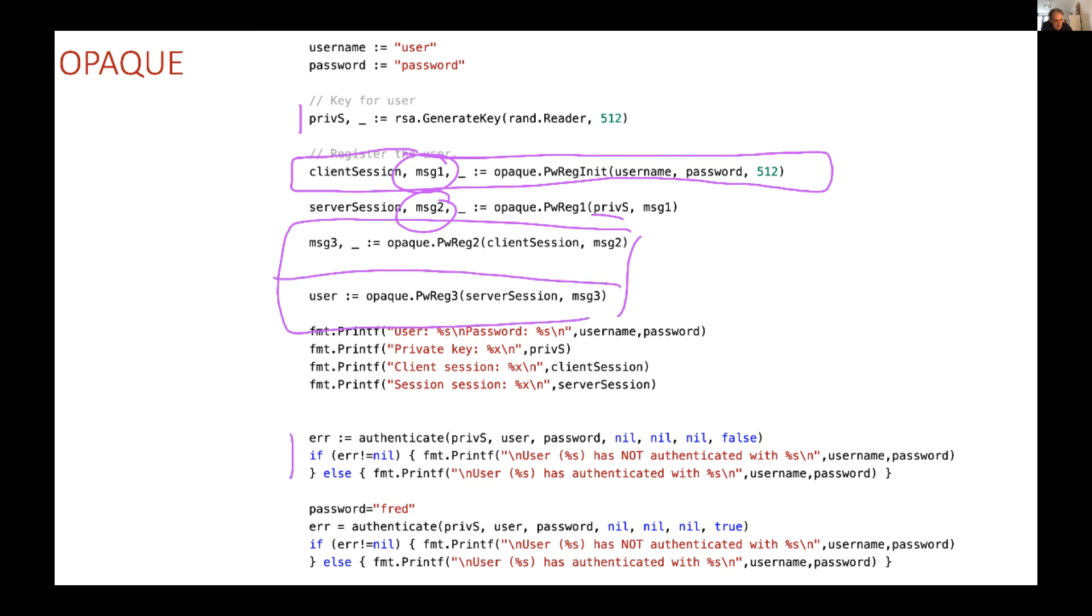Alice then sends this back using her key there. And then in the end the user is registered here. We can then authenticate the user with the correct password. So in this case we've used the right password and we should be able to authenticate. If we change the password and try to authenticate, hopefully it will show us that we cannot authenticate the user.